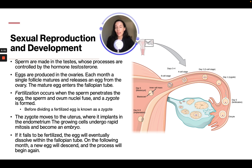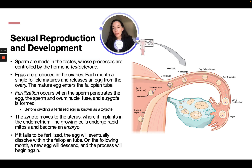Sperm is made in the testes, whose processes are controlled by the hormone testosterone. Eggs are produced in the ovaries, and each month a single follicle matures and releases an egg from the ovary. The mature egg enters the fallopian tube. Fertilization occurs when the sperm penetrates the egg, the sperm and ovum nuclei fuse, and a zygote is formed. Before dividing, a fertilized egg is known as a zygote. The zygote moves to the uterus where it is implanted in the endometrium, and the growing cell undergoes rapid mitosis and becomes an embryo. If it fails to be fertilized, the egg will eventually dissolve within the fallopian tube, and on the following month a new egg will descend and the process will begin again.